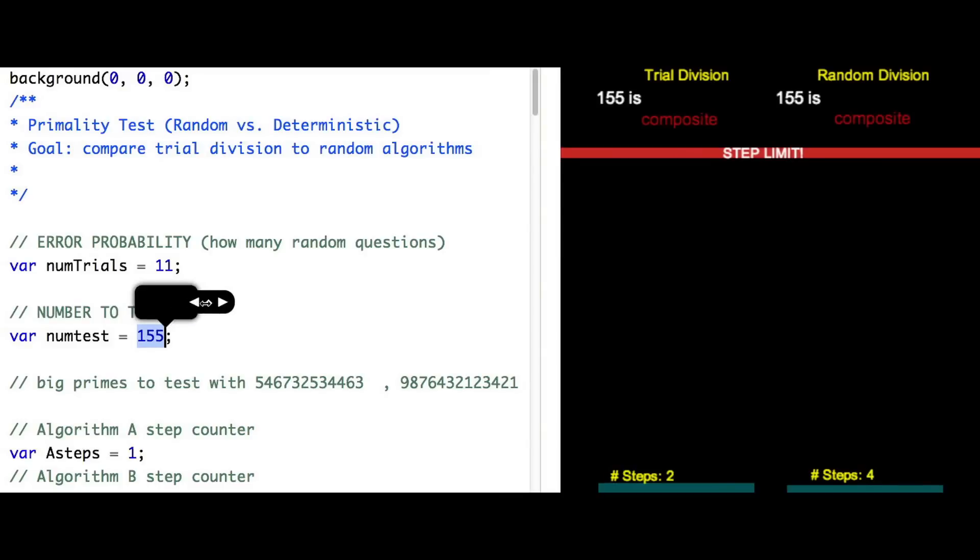And as I test larger input, the error grows again. So I need to increase the number of random tests accordingly. And when I do, the outputs match very nicely. They seem identical.